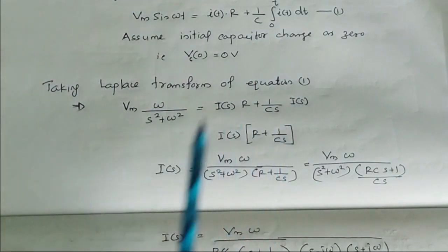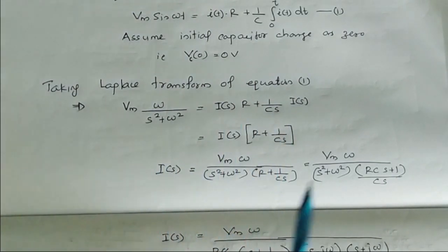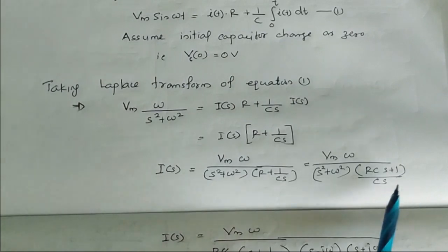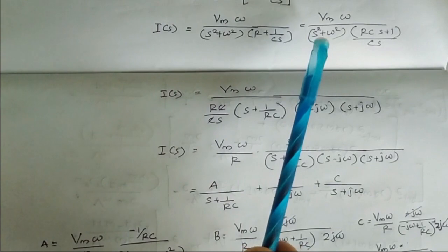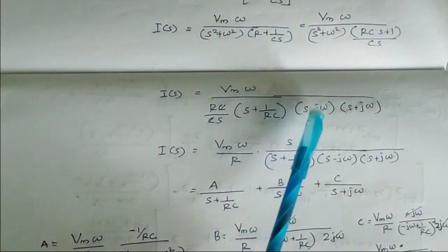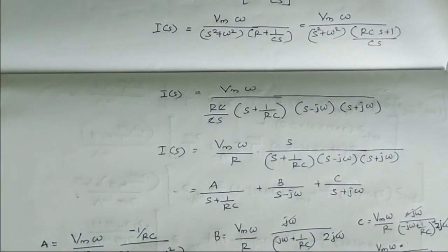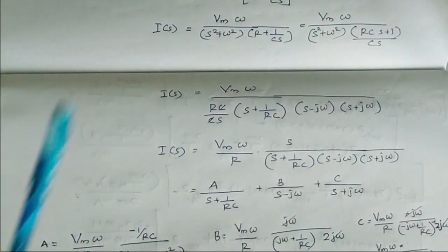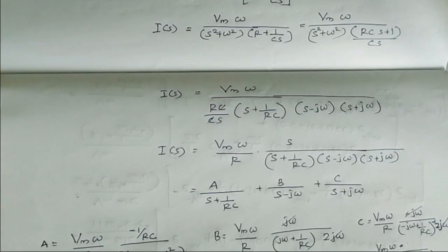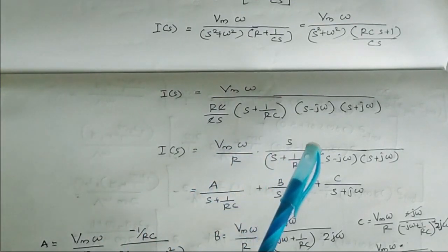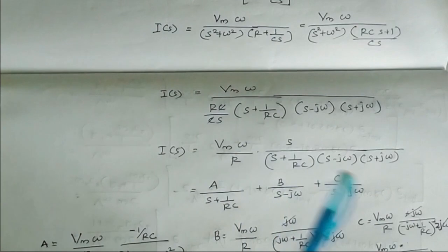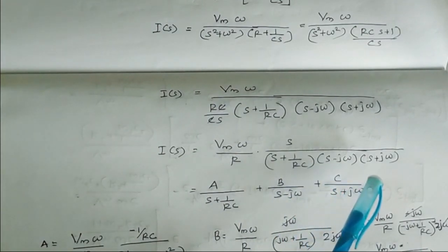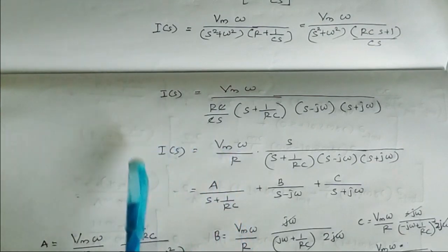Simplifying, we obtain the expression for I(s) as [Vm·ω / (s² + ω²)] · [(RCs + 1) / (Cs)]. Just like in the RL circuit, we can split the (s² + ω²) component into (s − jω)(s + jω), so I(s) becomes: Vm·ω / R · [s / ((s + 1/RC)(s − jω)(s + jω))].